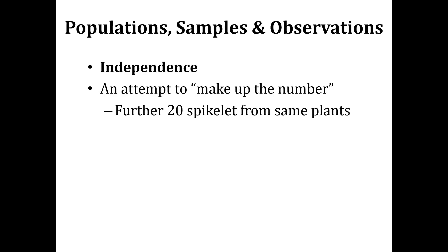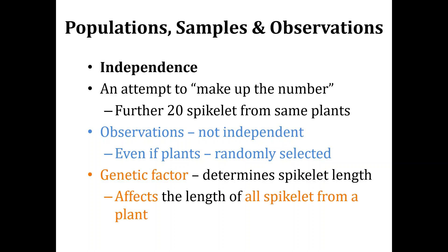But this is not the right way to do it, because the observations are not going to be independent — even if the plants are randomly selected. From those 80 plants, at least 20 have double observations taken. Although a different spikelet is taken from each plant, those observations are still dependent. There may be some genetic factor that determines spikelet length and affects all spikelets from a plant, so two observations from the same plant are inherently linked and not independent.